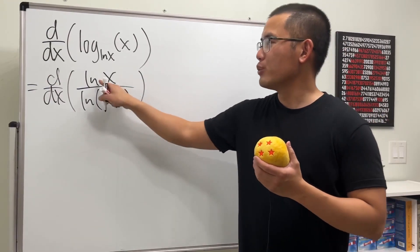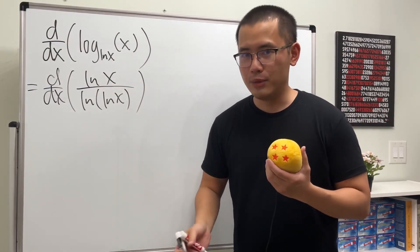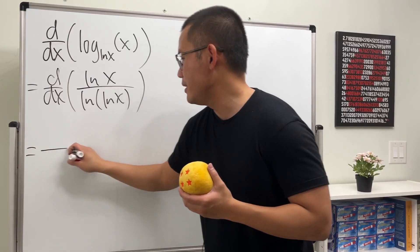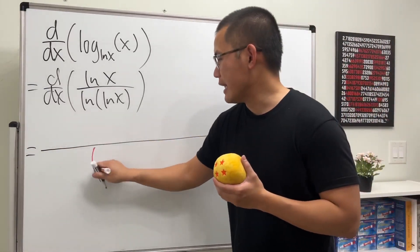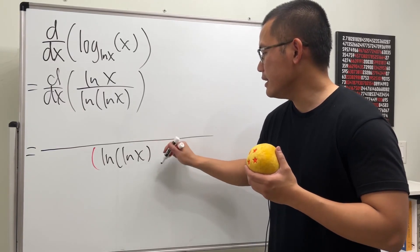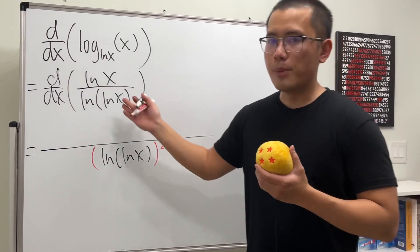is ln(x). Wow, look at that! But do not cancel these though. Here we will have to use the quotient rule. Let's see, I'm going to square the denominator, which will have ln(ln(x)) squared. Good. And now we'll put the bottom